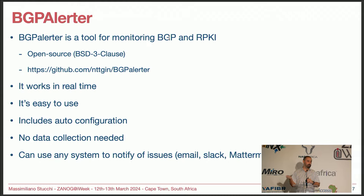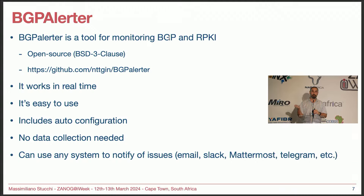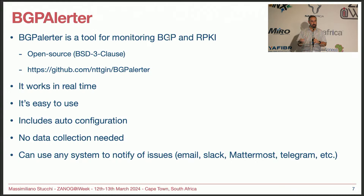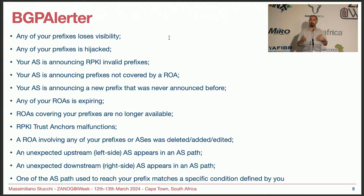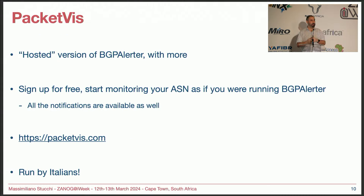The next step would be to use BGP Alertor. BGP Alertor is a tool for monitoring BGP and RPKI — both of them in one go. It's open source; you can find it on GitHub. Whenever something goes wrong, you know about it before others do. There's a lot that BGP Alertor does, and as I said, it's very easy to install and run — when you just do a wget, you get the executable.